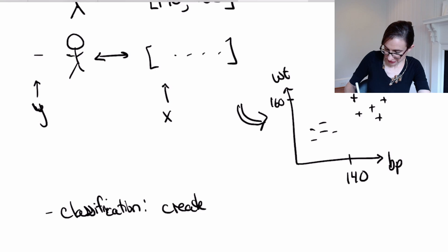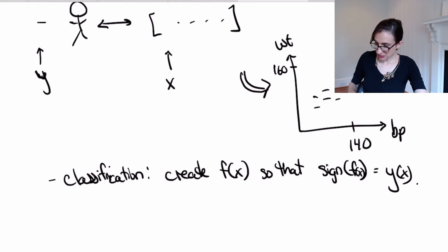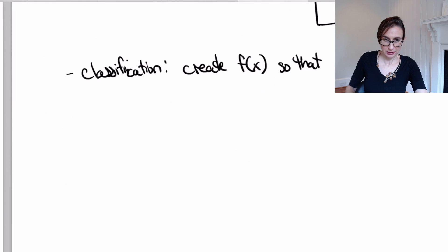f of x, so that the sign of f equals the label y, which is a function of x. So let's say the sign of f of x equals the label y of x.